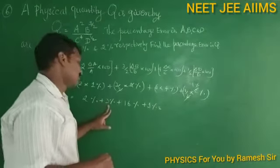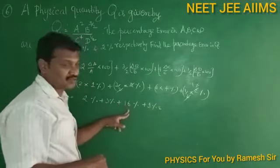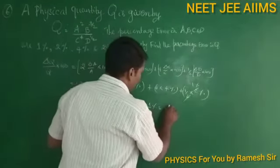2 plus 3 equals 5, 5 plus 16 equals 21, 21 plus 1 equals 22 percentage.